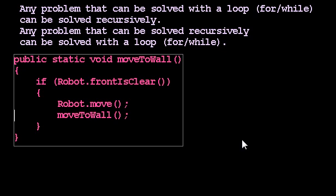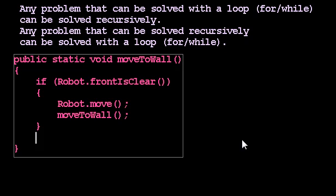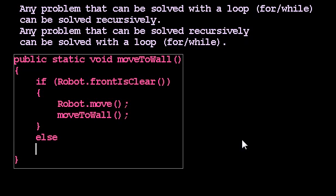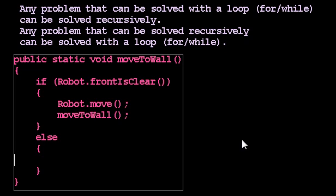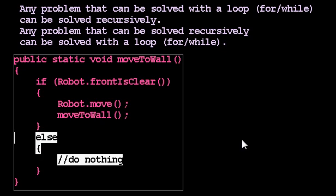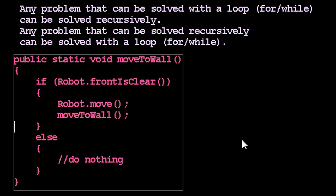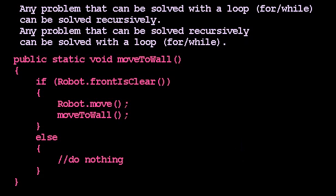We know it's safe to move to the wall, and moving to the wall will then check if it's clear, move again, then move to the wall, and so on. We saw that actually run, and I want to convince ourselves that it makes sense. I'm going to fill out that in the else case, we don't do anything at all.